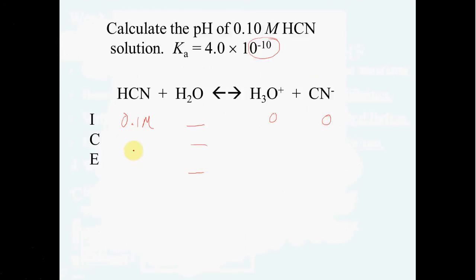You've got 0, 0, minus x, plus x, plus x. That gives you 0.1 minus x, x, x. When you put that into the equilibrium expression, you've got x squared over 0.1 minus x. Of course, we're going to simplify and leave that out. And that's going to be equal to our 4.0 times 10 to the negative 10.